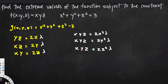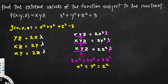Dividing everything by lambda, we see that xyz/λ = 2x², xyz/λ = 2y², and xyz/λ = 2z². Since all left-hand sides are equal, we get 2x² = 2y² = 2z², which simplifies to x² = y² = z².